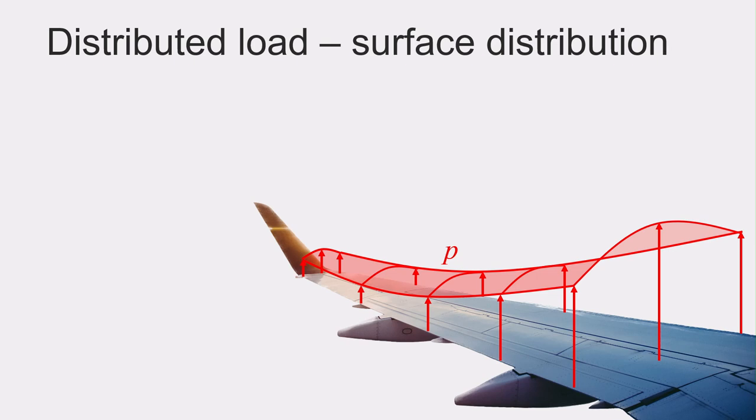First, we need to consider what a distributed load is. The first type of distributed load we will look at is a surface distribution. Here the entire force is distributed over an entire surface area, resulting in a pressure distribution, where we use a lowercase p to denote the pressure. And this pressure will have the units of force per unit area, or newtons per meter squared.